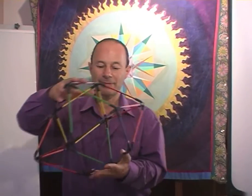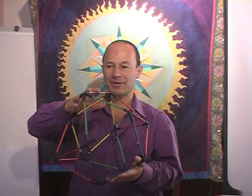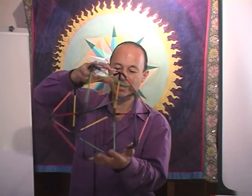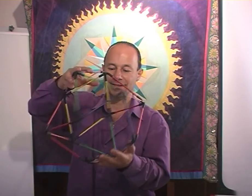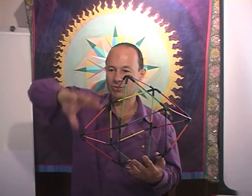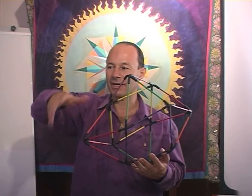So Buckminster Fuller's name for this cube octahedron was actually the jitterbug, because each time when he compressed it like this, it would alternate, it would oscillate left, right, left, right.